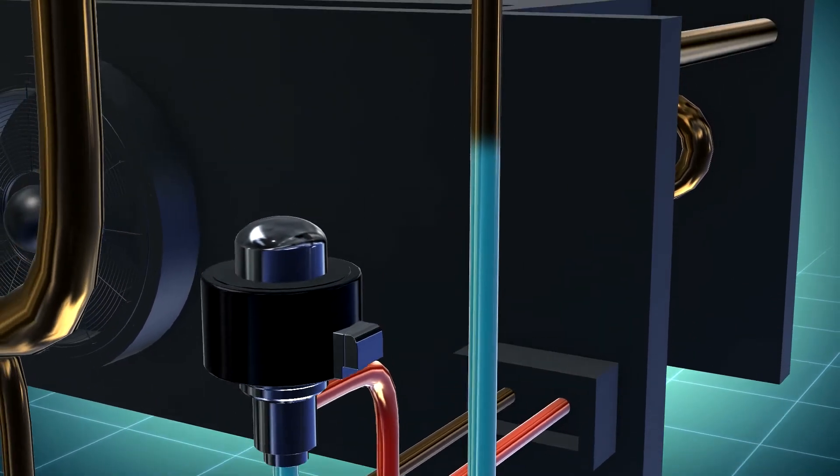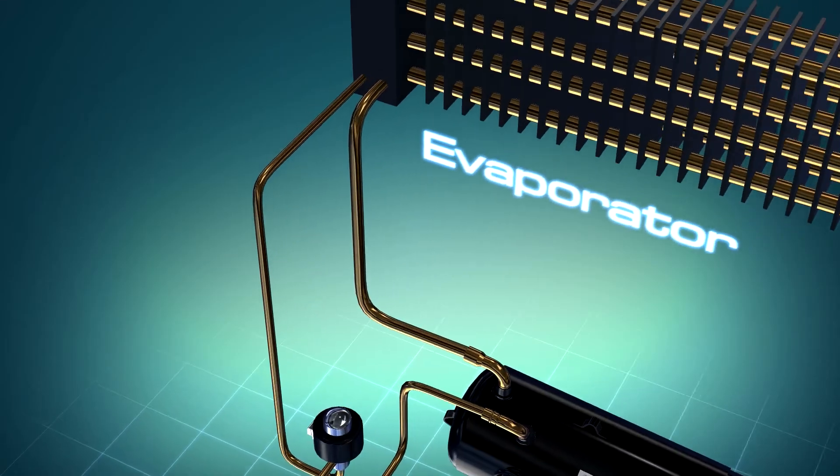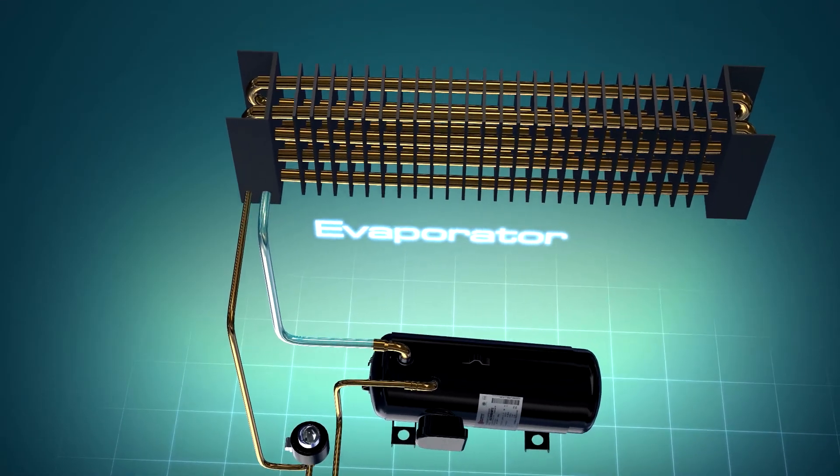Next, connect a pipe from the valve to the evaporator. Finally, connect the evaporator to the suction pipe.